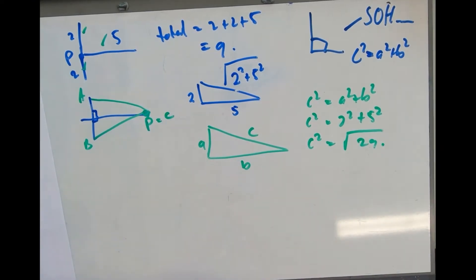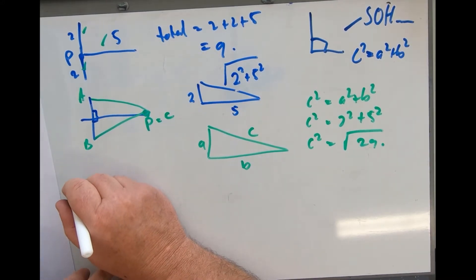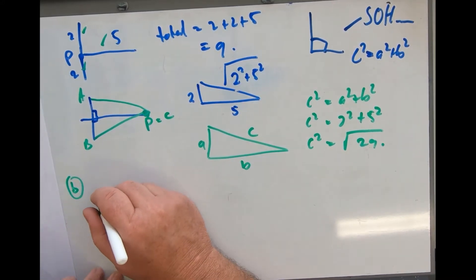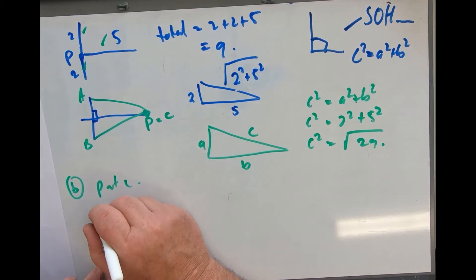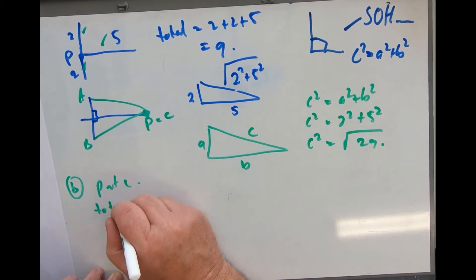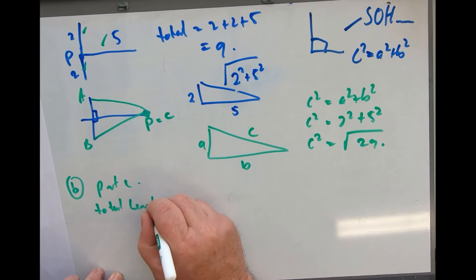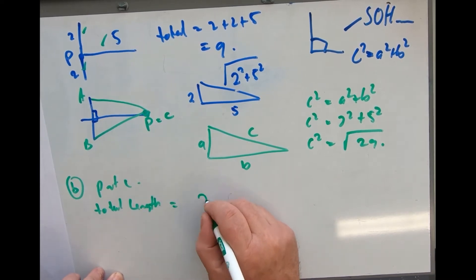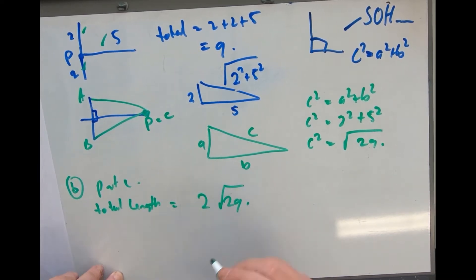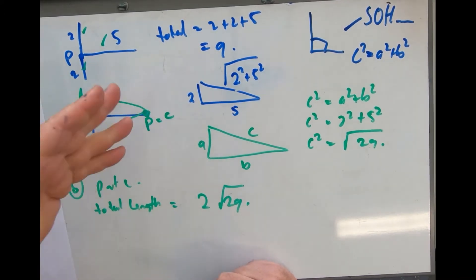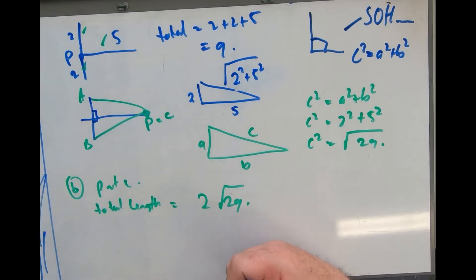If P is at C, total length is two times the square root of 29. I wonder how many people forgot the factor of 2, because you have to go from here to there and here to there. It's reflected.